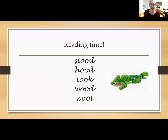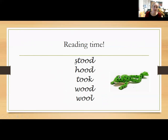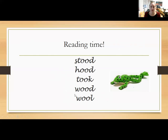So now we're going to do some reading using the words and sounds we've already been looking at today. We're going to identify the sounds, Fred talk it, and then blend it. So: S-T-U-D — stood. U-H-U-D — hood. U-T-U-K — tuck. U-W-U-D — wood. U-W-U-L — wool. Well done if you got those ones correct.